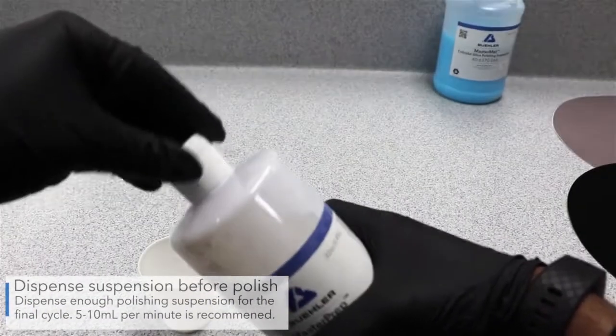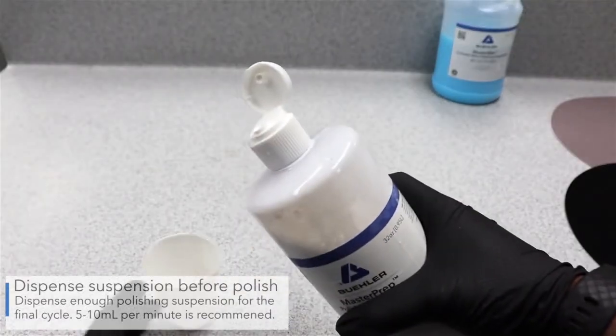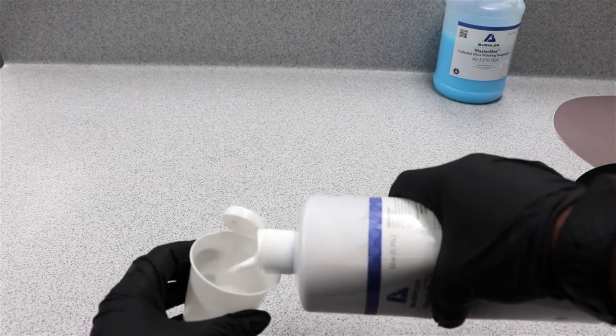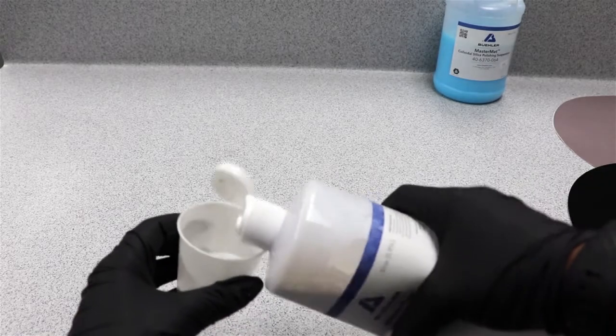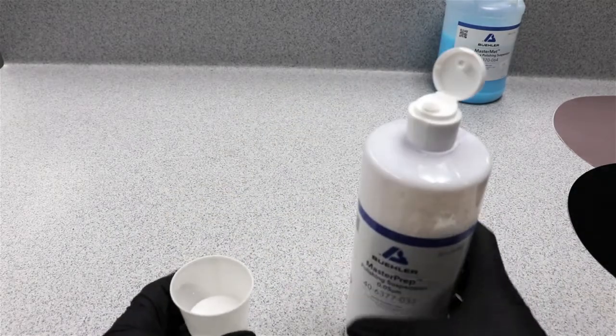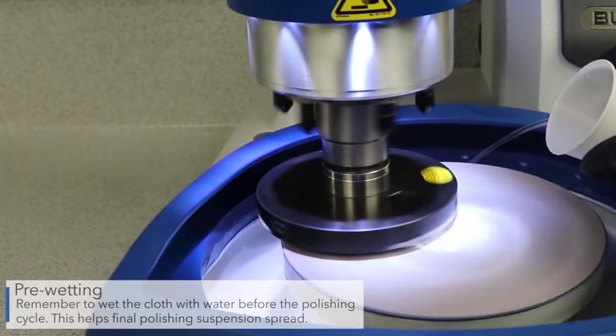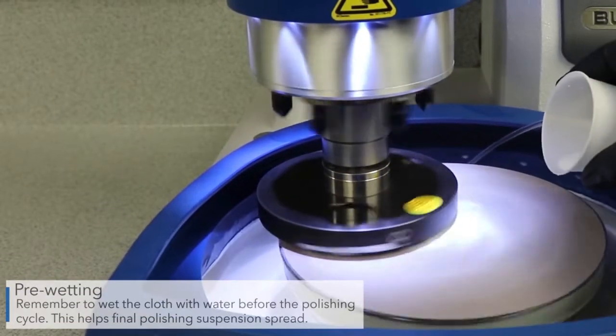Before final polish, dispense enough final polishing suspension for the final polishing cycle. Typically 5 to 10 milliliters per minute is recommended. Remember to wet the cloth with water before the final polishing cycle begins. This helps the final polishing suspension spread.